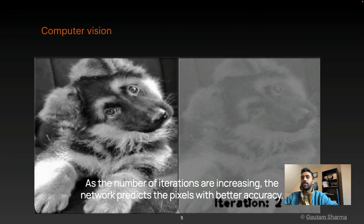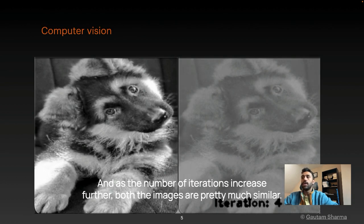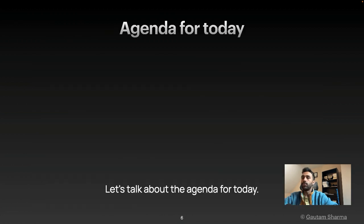As the number of iterations are increasing, the network predicts the pixels with better accuracy. And as the number of iterations increase further, both the images are pretty much similar. Let's talk about the agenda for today.